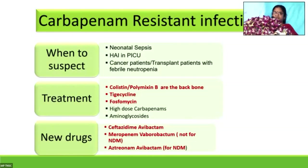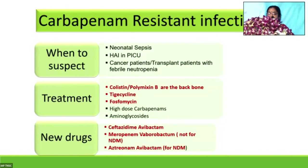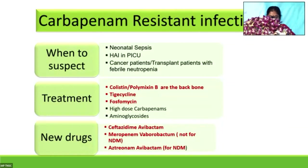Carbapenem-resistant infections are the next group. As per infectious disease specialist Tanu Sehgal from North India, 50 to 60% of her infections are carbapenem-resistant. We probably see 10 to 20% of cases, and they are very common in neonatal sepsis, ICU infections, and immunocompromised patients. Drug of choice for carbapenem-resistant infections is colistin, tigecycline, or fosfomycin. Newer drugs include ceftazidime-avibactam, meropenem-vaborbactam, and aztreonam-avibactam — available in the private sector but not widely seen due to limited culture data.